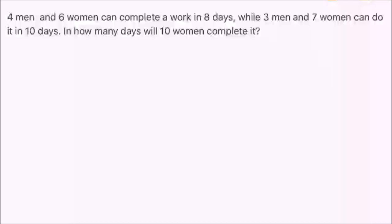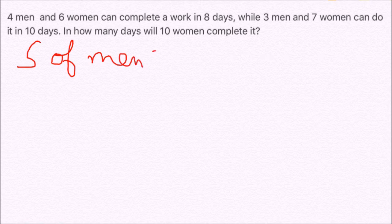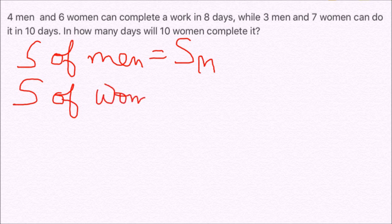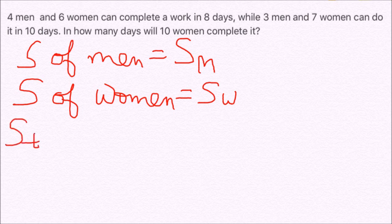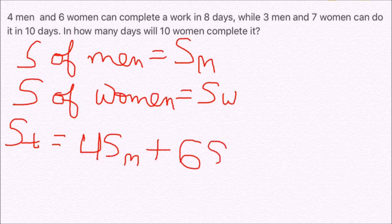So using the same approach, let us assume that speed of men is SM while speed of women is SW. According to the question, the first case becomes the total speed 4 times SM plus 6 times SW.